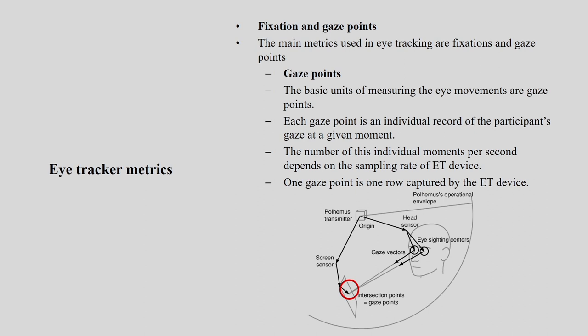Let us understand each variable separately. First is gaze point — the basic unit of measuring eye movement. Each gaze point is an individual record of a participant's gaze at a given moment. The number of individual moments per second depends on the sampling rate of the eye tracking system — systems like Tobii and SMI each have their own sampling rate. One gaze point is one row captured by the eye tracking device.